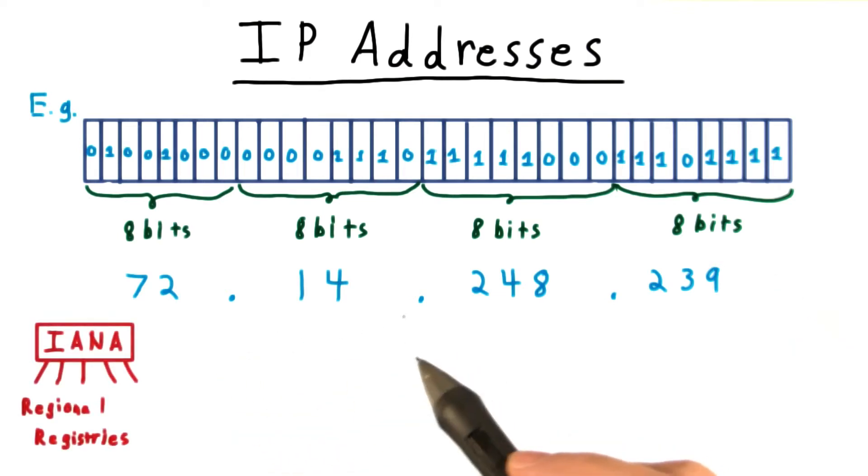Ranges of addresses are allocated by regional Internet registries, all of which are under control of IANA, the International Assigned Numbers Authority.